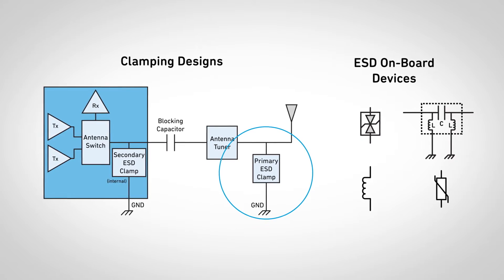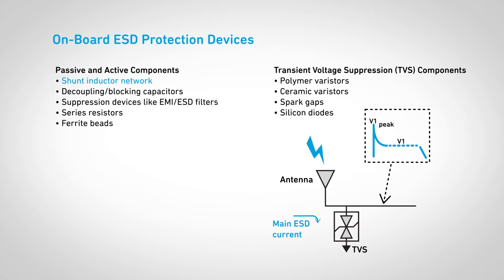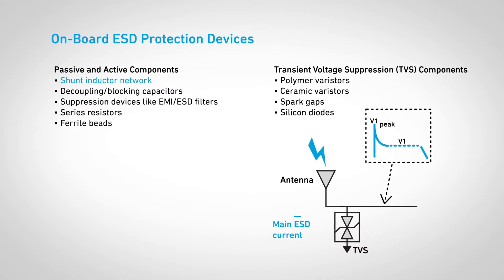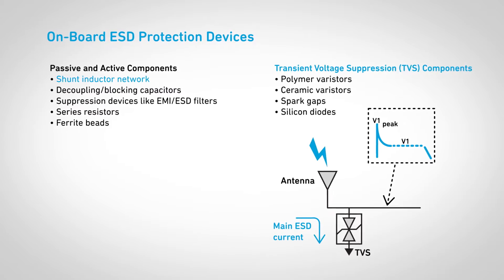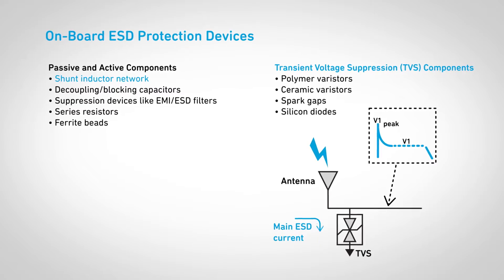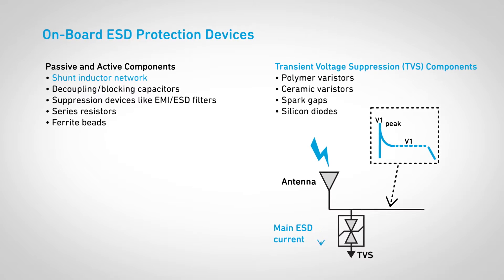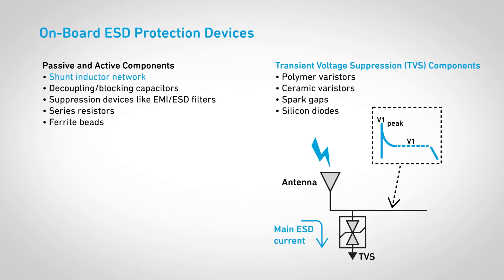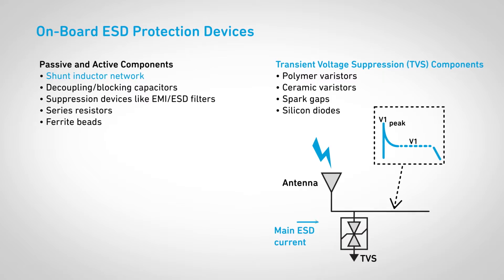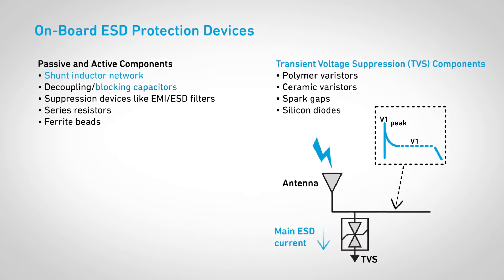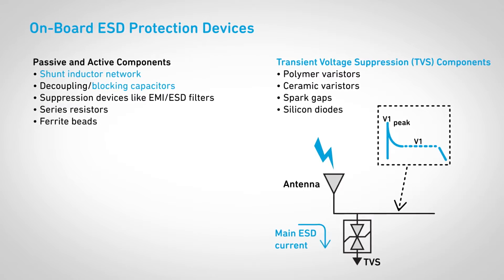Several primary clamping devices can be used. Shunt inductors are frequently used, as well as transient voltage suppression devices, or TVS for short. For RF antenna port applications, shunt inductors, block capacitors, and TVS components are used the most.